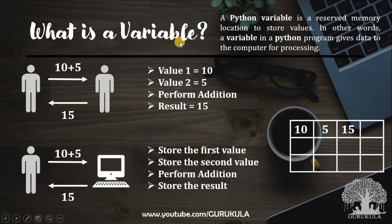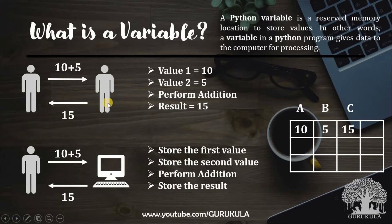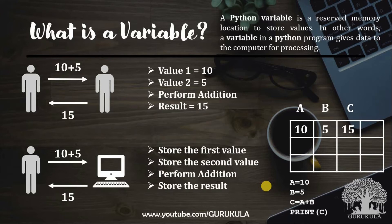For example, 10 has a name, 5 is a number with a name, 15 is a number with a name. So we have variables: a is equal to 10, b is equal to 5, c is equal to a plus b — this is an arithmetic operation. Then print c.